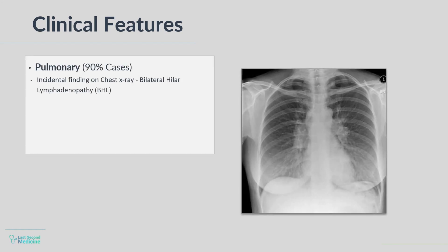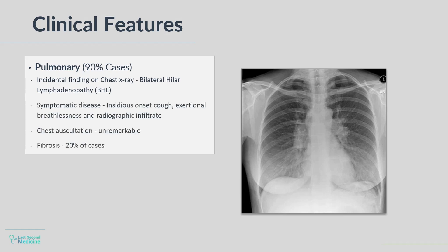Sarcoidosis can involve any organ, but over 90% of cases affect the lungs. It can be an incidental finding, sometimes discovered as bilateral hilar lymphadenopathy on a chest X-ray done for some other purpose in an otherwise asymptomatic person. Pulmonary disease may also present insidiously with cough, exertional breathlessness, and radiographic infiltrates. Chest auscultation is often surprisingly unremarkable. Fibrosis occurs in around 20% of cases of pulmonary sarcoidosis and may cause a silent loss of lung function.